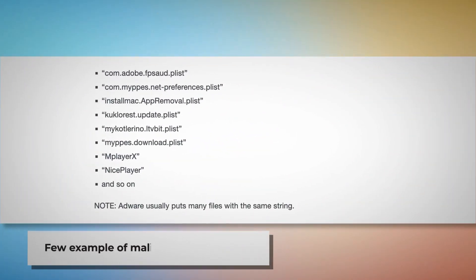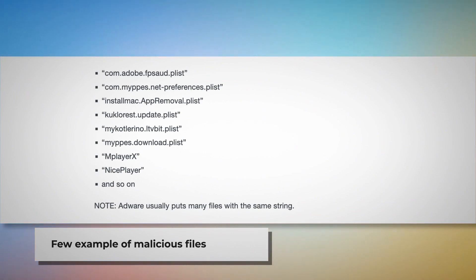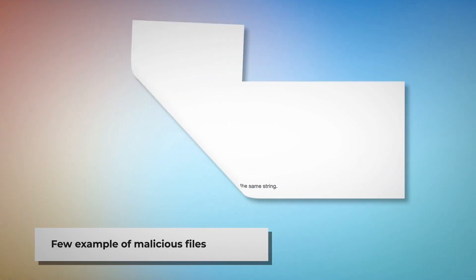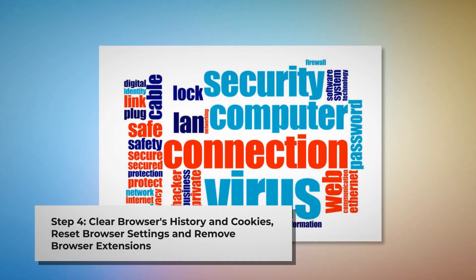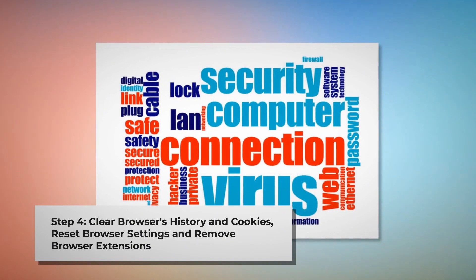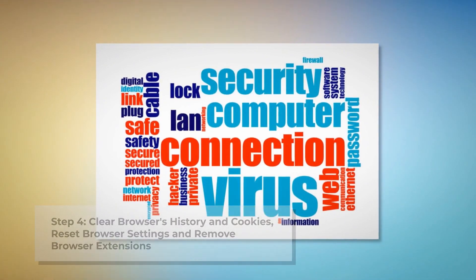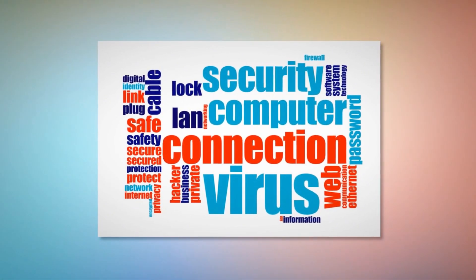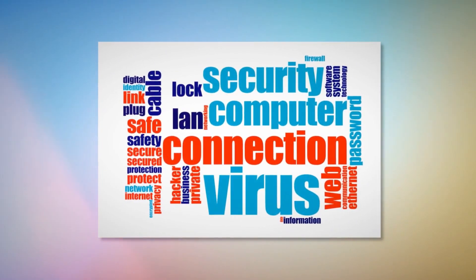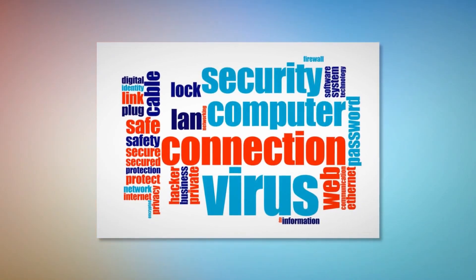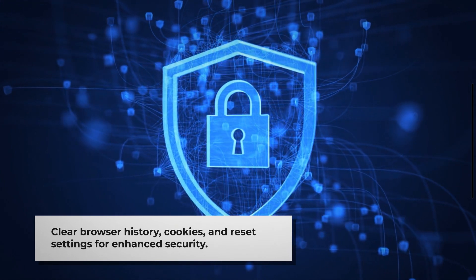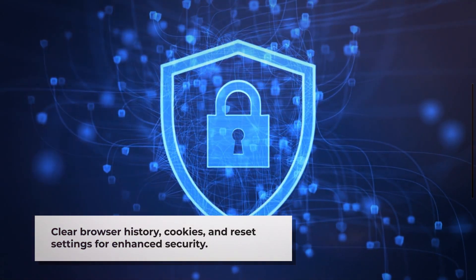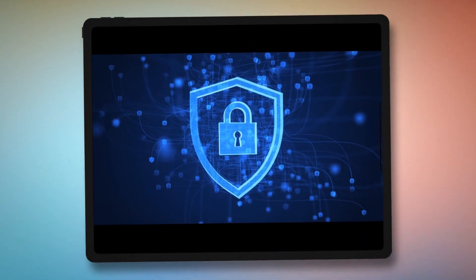A few examples of such malicious files are shown here. Note: Adware usually puts many files with the same string. Step 4: Clear your browser's history and cookies, reset browser settings, and remove or disable unknown browser extensions to be safe from Adware. Once you delete the harmful files as mentioned in Step 3, you should delete malicious or unknown extensions from your browsers — Safari, Chrome, Firefox, Opera, and so on — whichever you are using. You should also delete browser history and cookies, and reset your browser. Note: Before you reset your browser settings, it is always a good idea to back up your bookmarks.